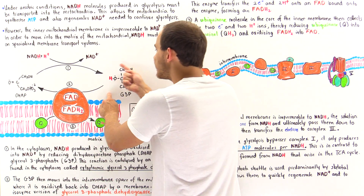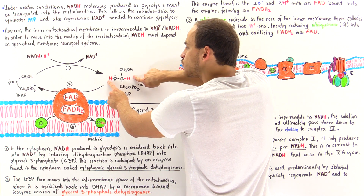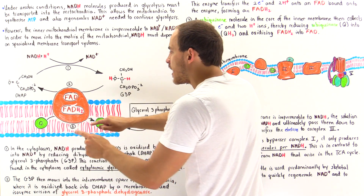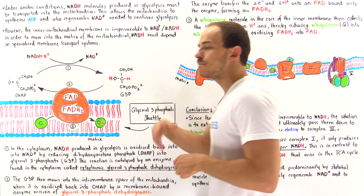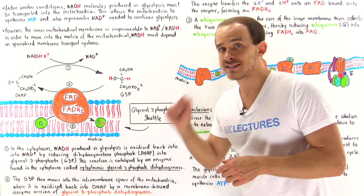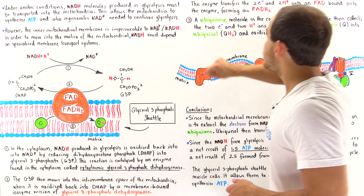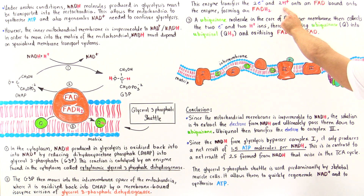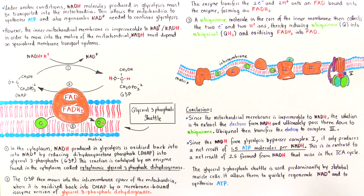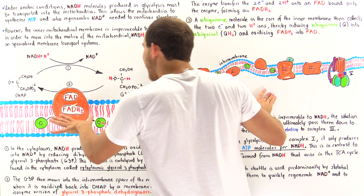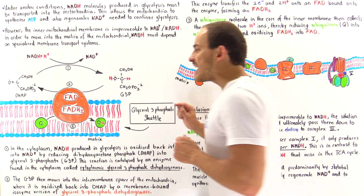The mitochondrial glycerol 3-phosphate dehydrogenase oxidizes G3P into DHAP by taking off two electrons and two protons and placing them onto an FAD molecule that is bound to that enzyme. FAD is flavin adenine dinucleotide and it can accept two protons and two electrons. In step 2, the enzyme transfers the two electrons and two protons from G3P onto FAD to form FADH2.